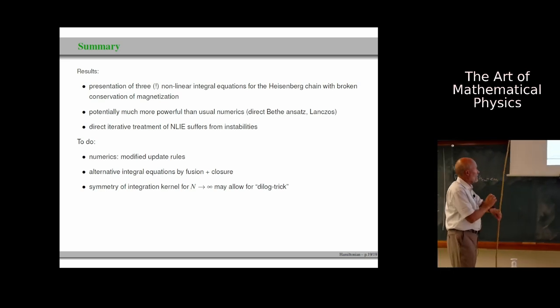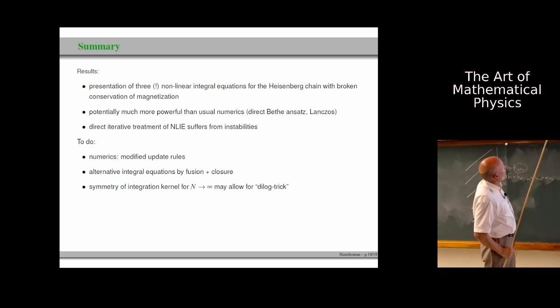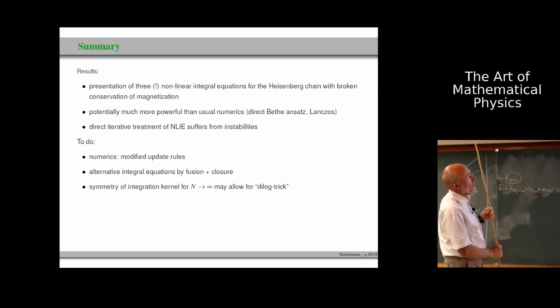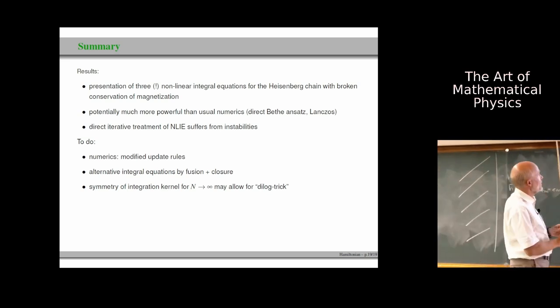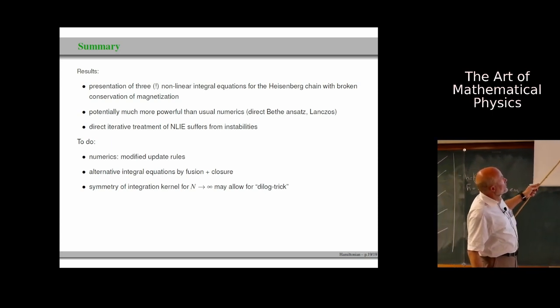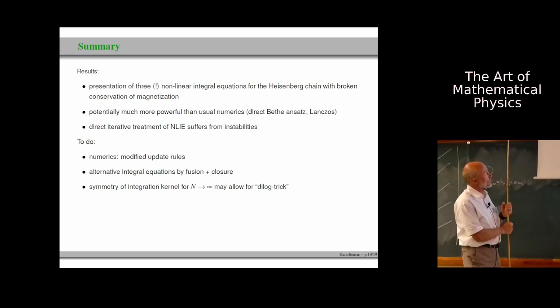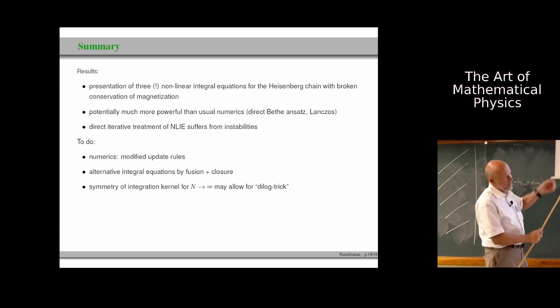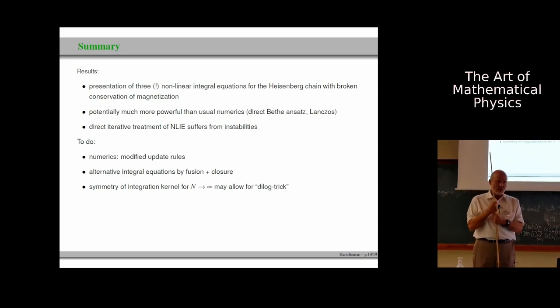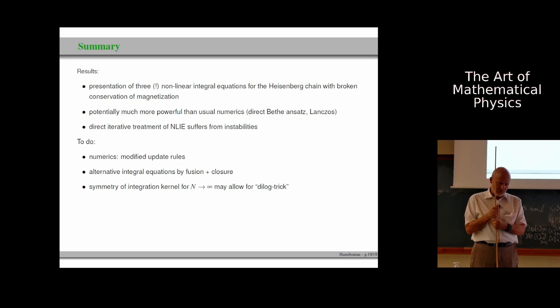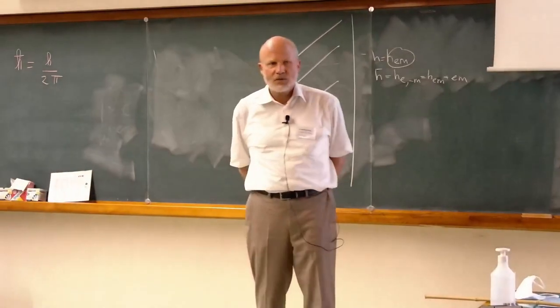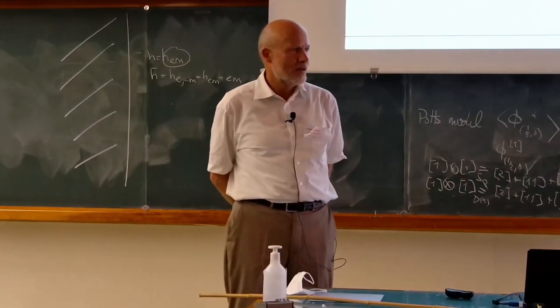This is now the summary of what I presented. Three instead of two nonlinear integral equations for the spin 1/2 Heisenberg chain with broken conservation of magnetization. I think it has a lot of potential. But the direct, iterative treatment of these integral equations suffers from instabilities. And one has to invent new techniques. I hope I'm still within time. What is left to be said is, happy birthday, Hubert. All right, thank you very much. So we have plenty of time for questions.